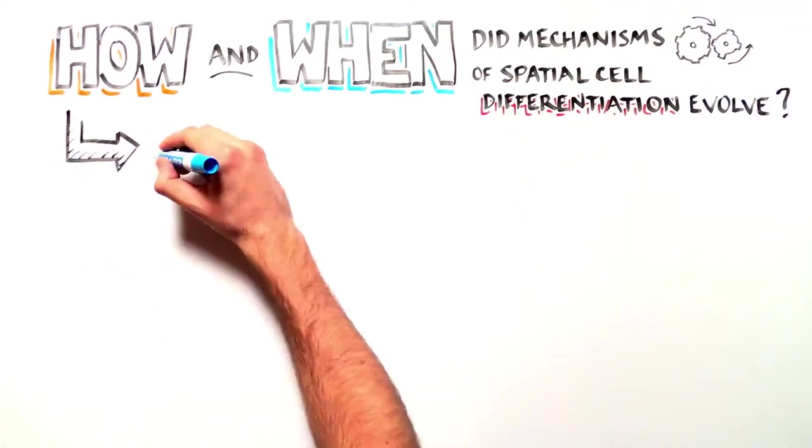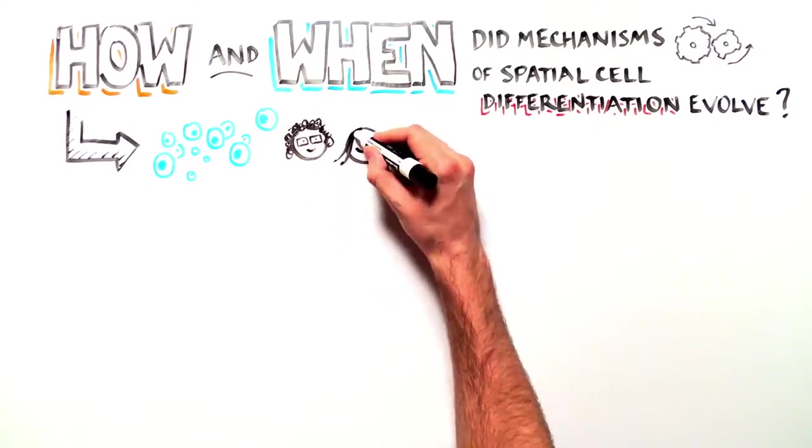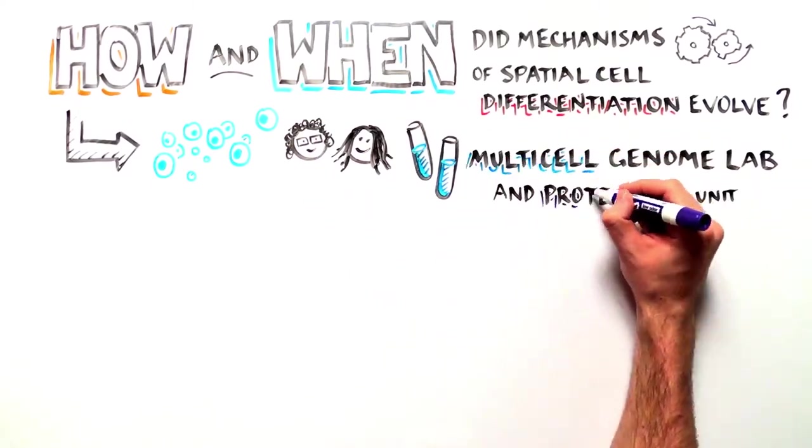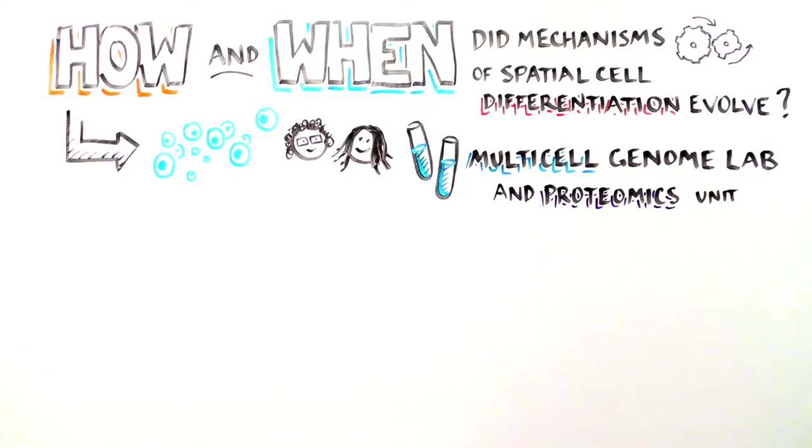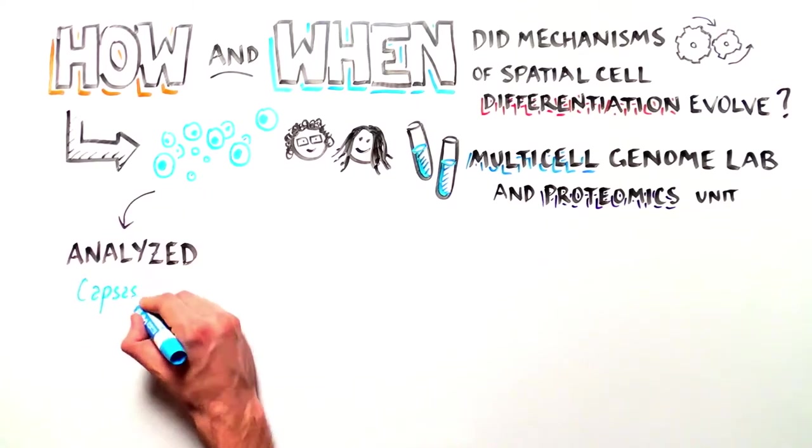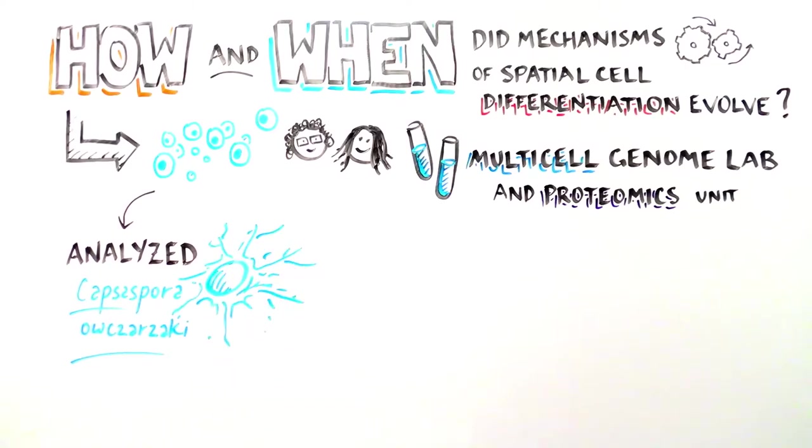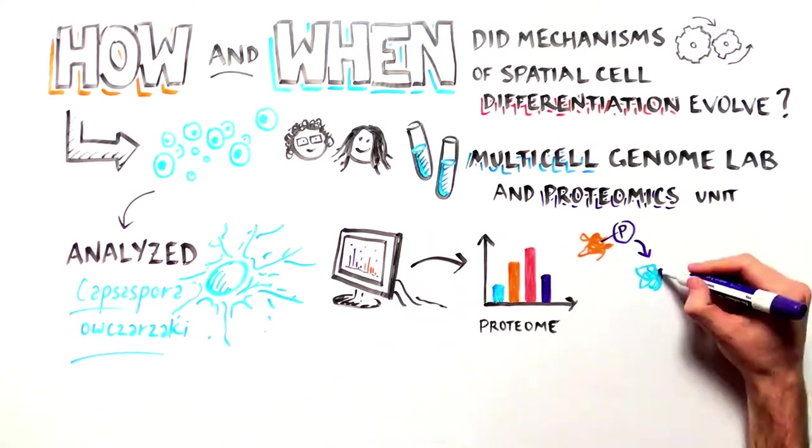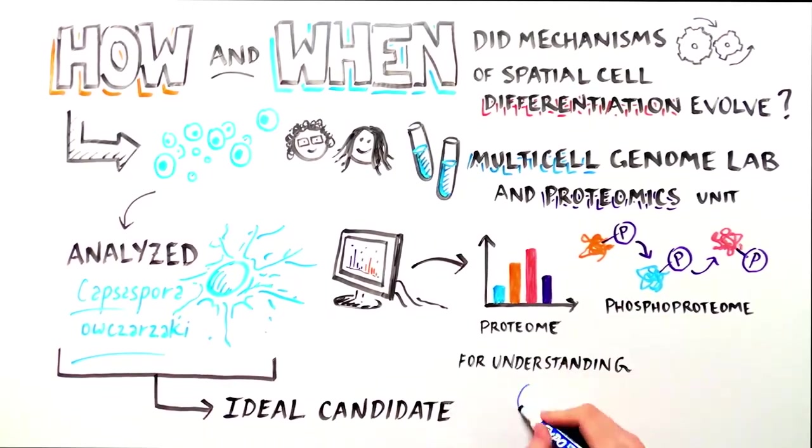To understand this transition, researchers at the Multicell Genome Lab and the proteomics unit analyzed the proteome and phosphoproteome of a close unicellular relative of animals, the amoeba Capsospora owczarzaki. This protist is an ideal candidate to understand the origin of cell differentiation for three main reasons.